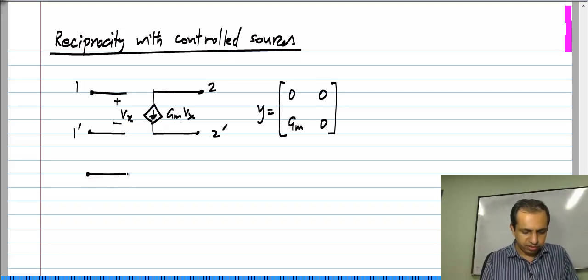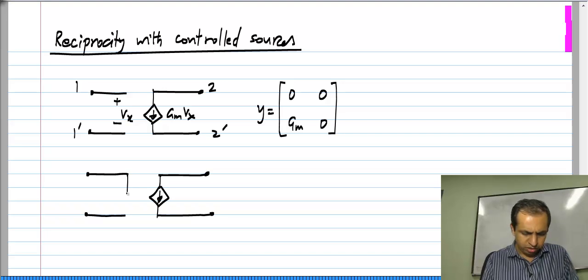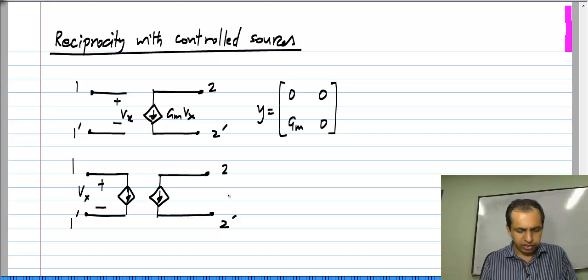For instance, we connect two controlled sources together. Let us say this is VX and this is GMVX, and if this is VY, that will be GMVY.